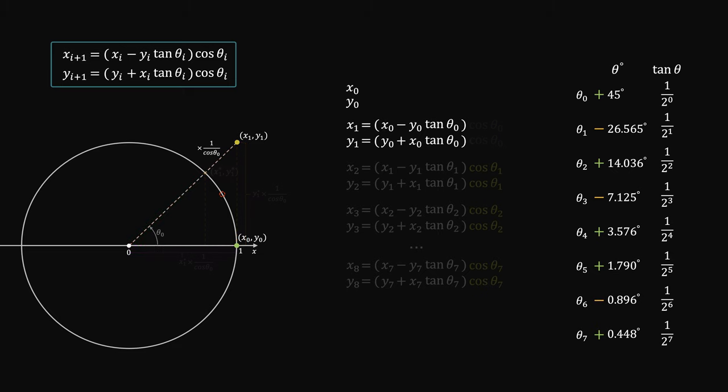So if we only carry out the first part of the calculation without the cosine multiplication, it's as if we're doing a scaled rotation.